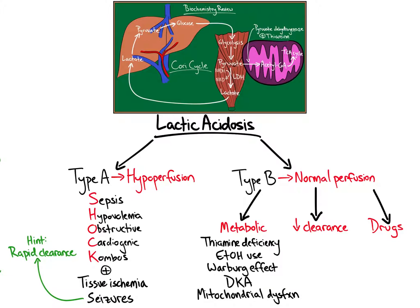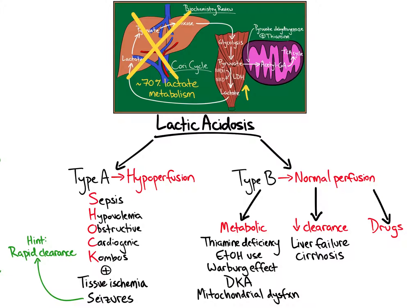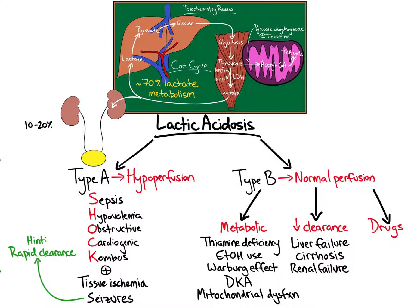Next, problems of decreased lactate clearance. The liver metabolizes or clears approximately 70% of lactate via the Cori cycle. Therefore, liver failure and cirrhosis can cause a type B lactic acidosis — essentially, if you knock out the liver, the Cori cycle cannot occur and lactate cannot be metabolized. Renal failure can also cause a type B lactic acidosis via decreased clearance, as the kidney is responsible for 10-20% of lactate metabolism. However, a healthy and functioning liver should be able to compensate.